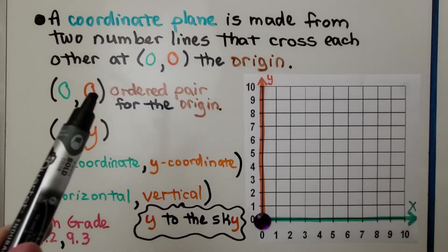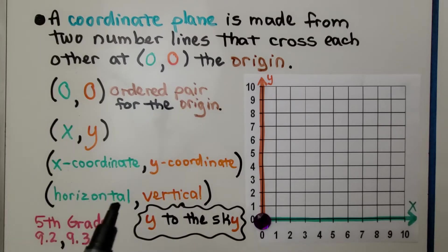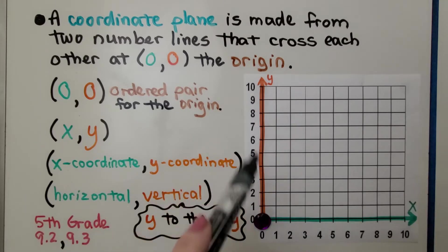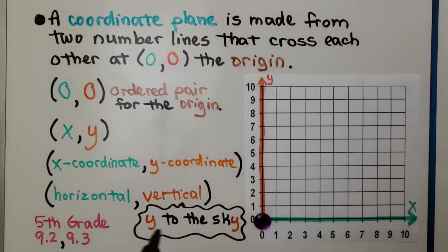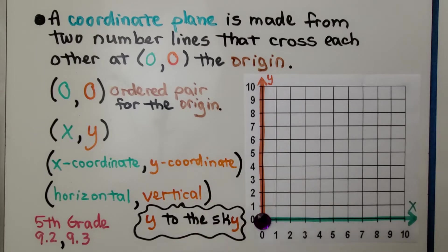We have our x value and our y value. It's our x coordinate and our y coordinate. It's the horizontal number and the vertical number. And it's easy to remember that y goes up because we can think of y to the sky. That's the y and that's the x going horizontally.